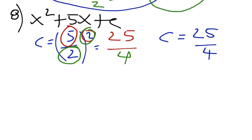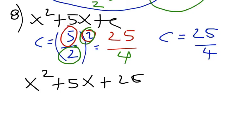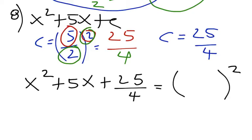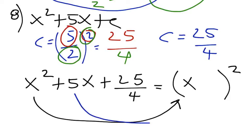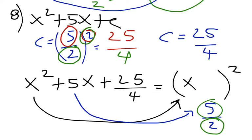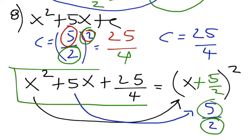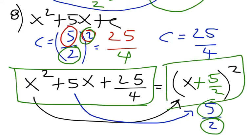Let's write the trinomial and the square of a binomial. My answer: x squared plus 5x plus 25 over 4 equals the square of a binomial. The first term is x, and the second term is half of 5, which is 5 over 2. So my answer is x squared plus 5x plus 25 over 4 — that's my perfect square trinomial — and the square of the binomial is x plus 5 over 2, to the second power. And we're done.